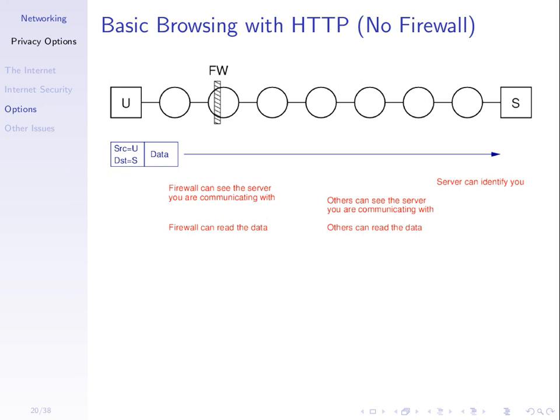What about others beyond the firewall — other people on the internet or other organizations that want to observe what you're doing? Because the data is not encrypted, others can read the data if they access packets on one of the routers, and others can see who you're communicating with. There's no confidentiality of data and no confidentiality of who is communicating when using HTTP. And the server receives a packet with your source address, so the server knows it's you contacting it — no confidentiality with respect to the server either.